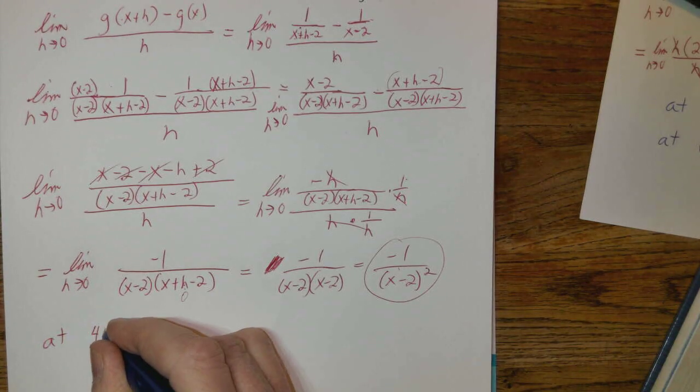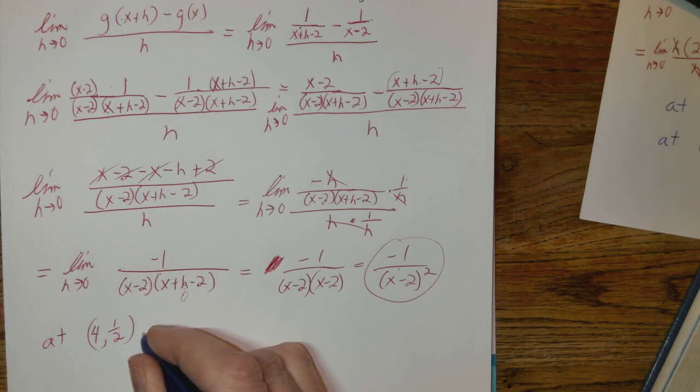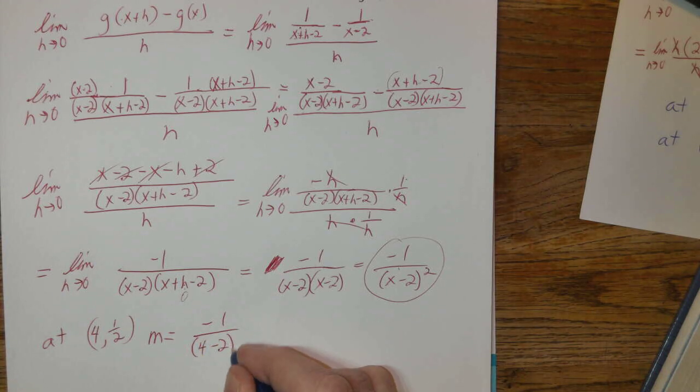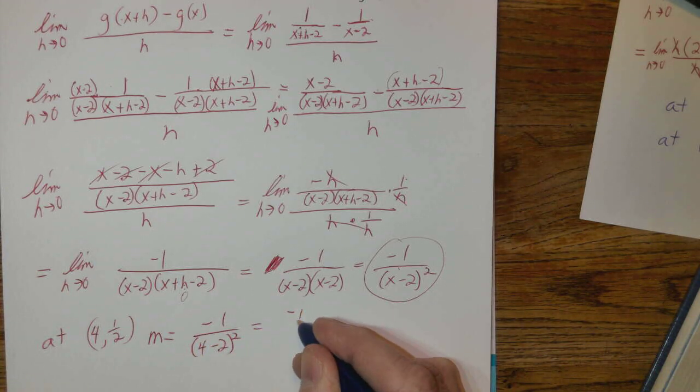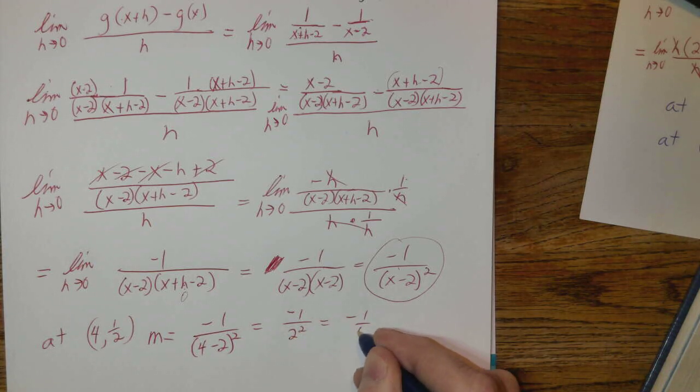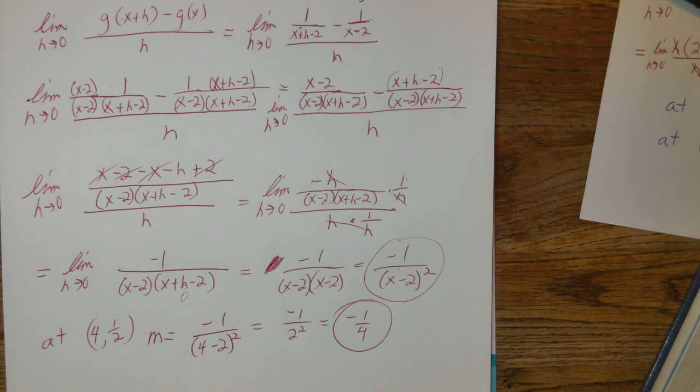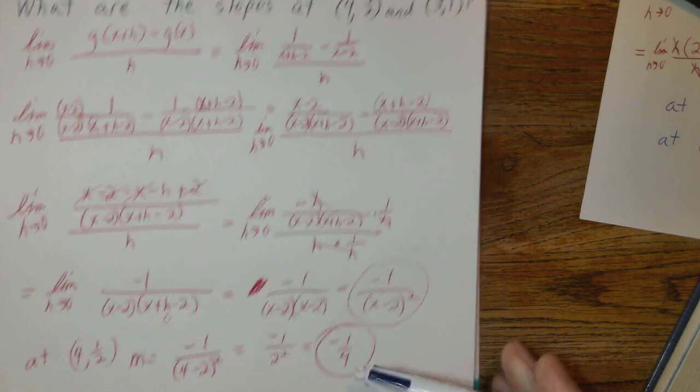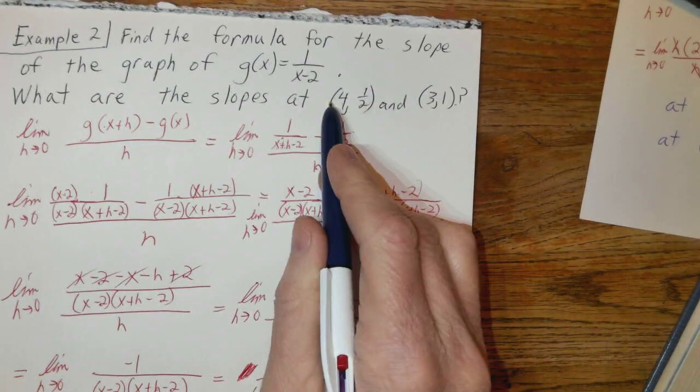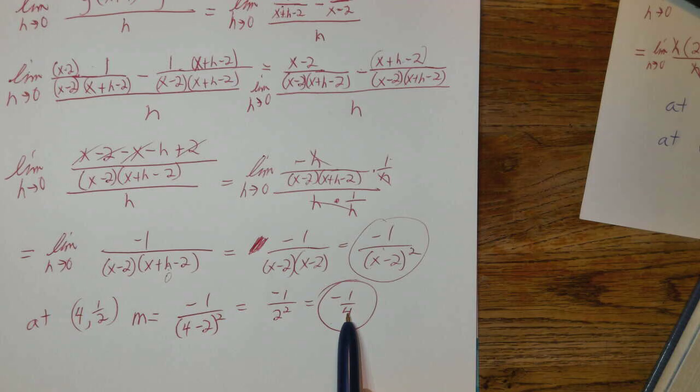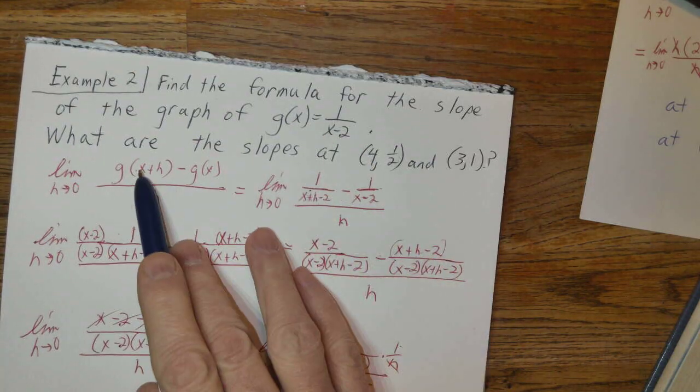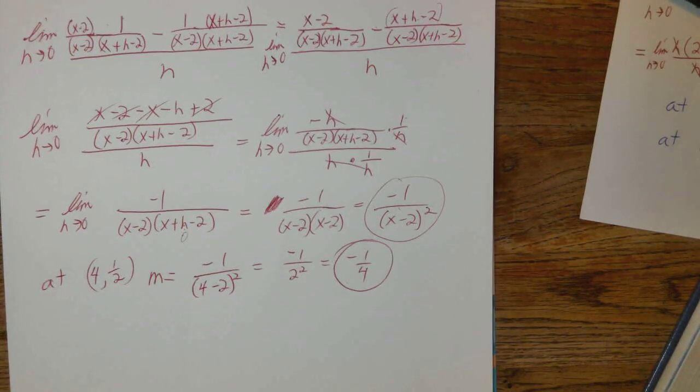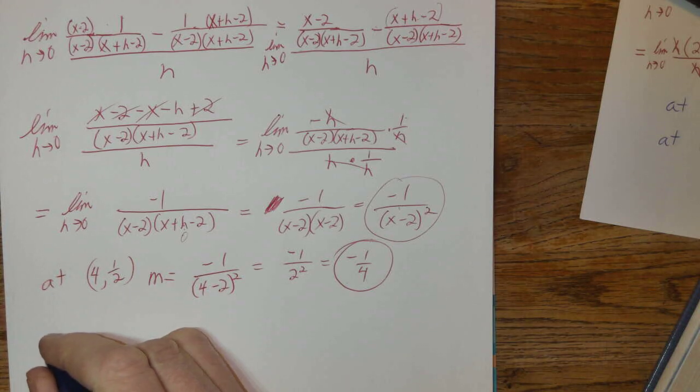At (4, 1/2), m will equal -1/(4-2)², or -1/2², which is -1/4. This might seem familiar. This was actually in the last assignment at this specific example, at (4, 1/2). We actually put the 4 in here and did the work, and many of you got that -1/4. I just wanted to give another look at it.